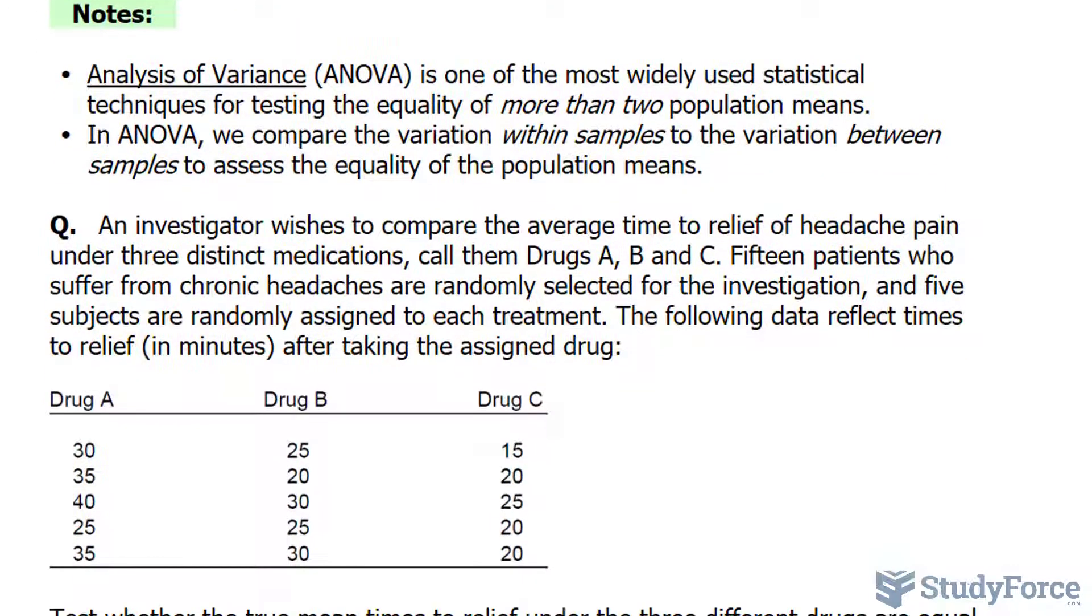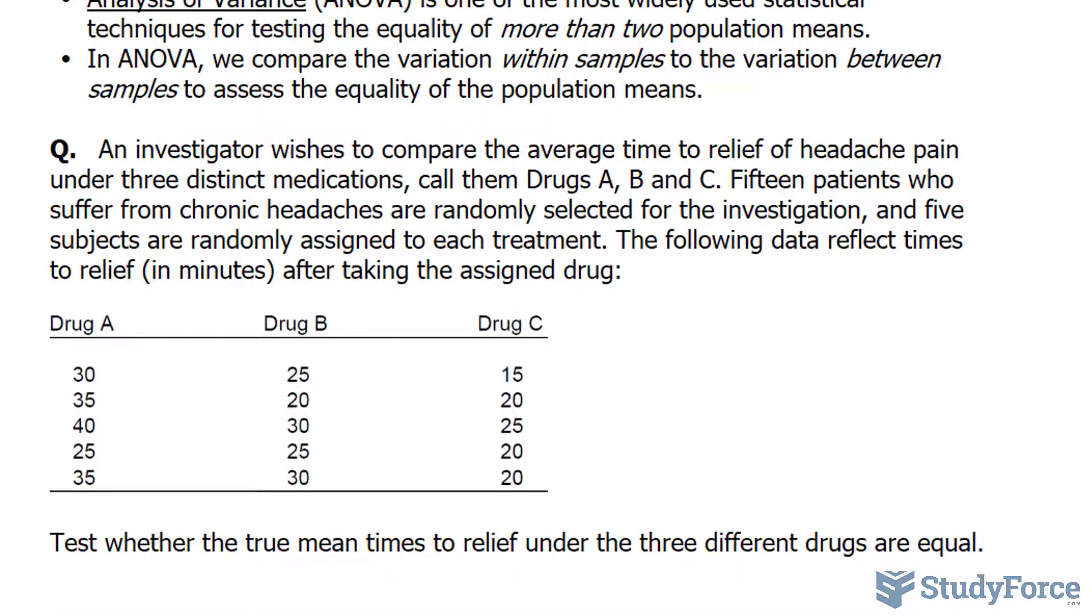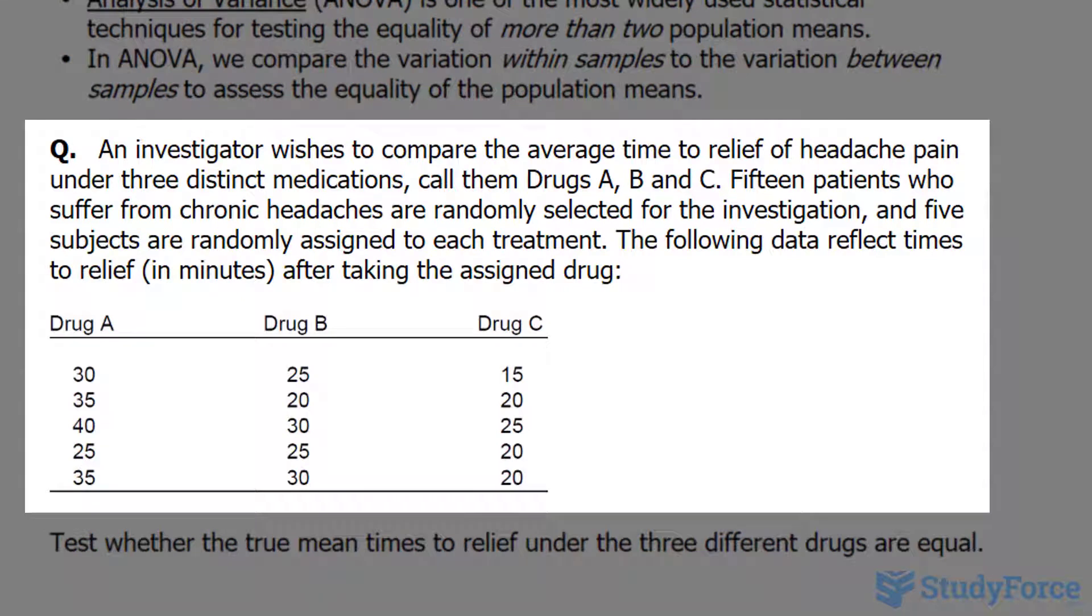The technique will be demonstrated using this question, where an investigator wishes to compare the average time to relieve headache pain under three distinct medications, called drug A, B, and C. Fifteen patients who suffer from chronic headaches are randomly selected for the investigation, and five subjects are randomly assigned to each treatment.